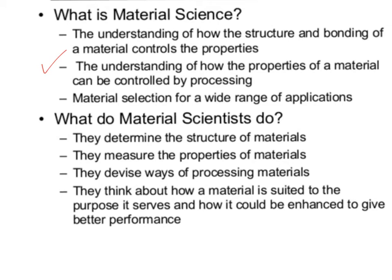And then finally, material selection for a wide range of applications. Material science is very often about choosing the right material for the right application — what do you need it for, and what properties does it need to have? This is coming up very soon as we enter this unit, because we're going to be looking at Flint, Michigan, and how choices made about materials used in their water system affected that community.